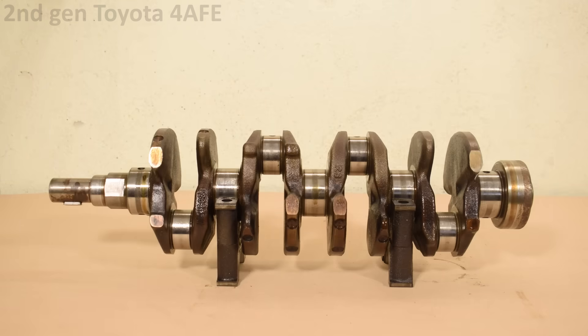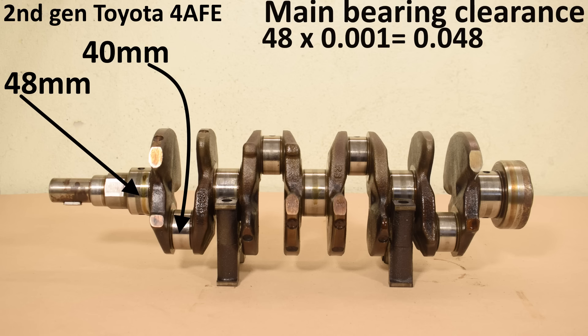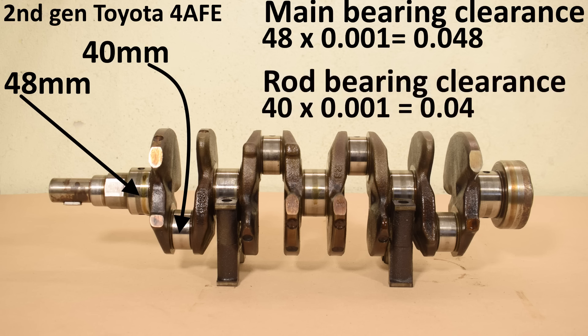For example, our engine right here is a second-generation Toyota 4AFE-16 valve engine with 48mm main journals and 40mm rod journals. Our rule of thumb tells us that our main bearing clearance is 48 times 0.001, which equals 0.048mm. In the same way, our rod bearing clearance is 40 times 0.001, which equals 0.04mm.